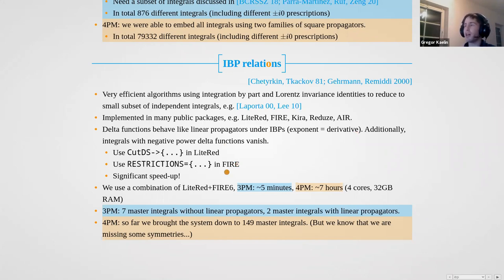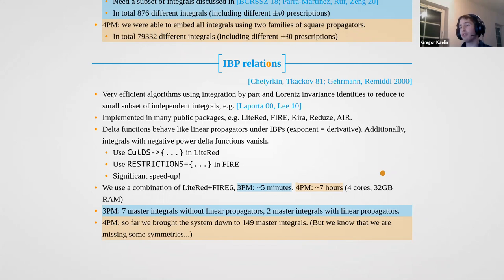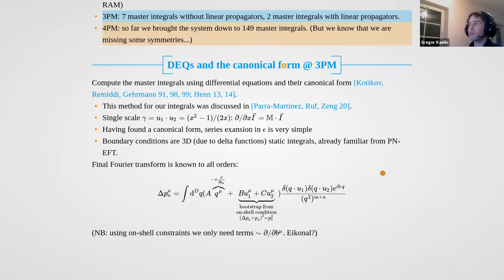This gave us a significant speed-up and really allowed us to run the whole 4PM integration-by-parts reduction overnight on a normal personal computer. For the 3PM problem we found seven master integrals without linear propagators and two that included linear propagators. At 4PM we've brought it down to around 150 masters so far, but this is just an upper limit because we've already found some symmetries we missed, and we hope to reduce that number further. The only thing we need to do to complete our computation is to evaluate these master integrals.